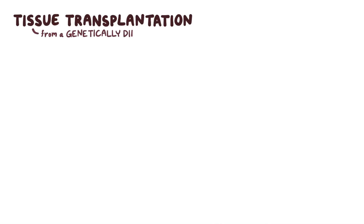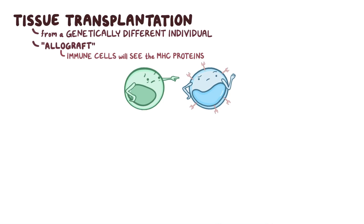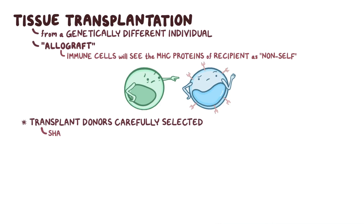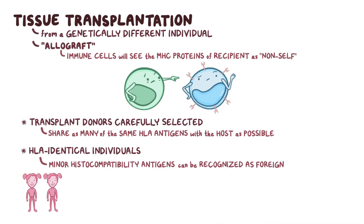When surgeons do a tissue transplantation, the transplant usually comes from a different person with different genes, and it's called an allograft. If there are immune cells within that allograft, they will see the MHC proteins that coat every cell of the recipient's body as foreign. That's why transplantation donors are carefully selected to make sure that they share as many of the same HLA antigens with the host as possible. But even between HLA-identical individuals, other antigens, called minor histocompatibility antigens, can be recognized as foreign and trigger an immune response.